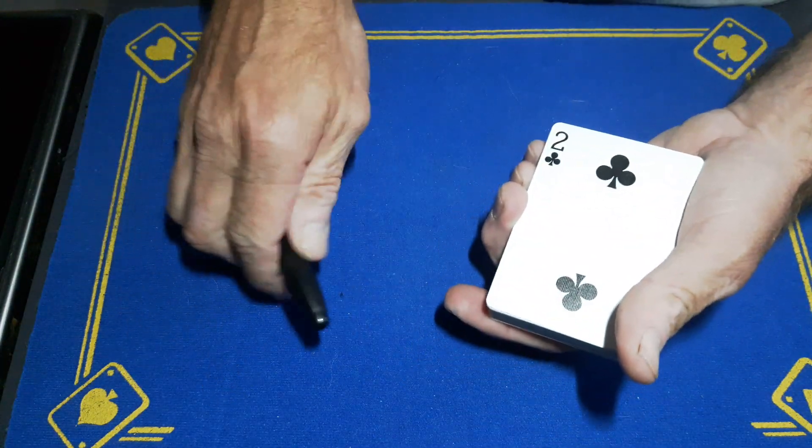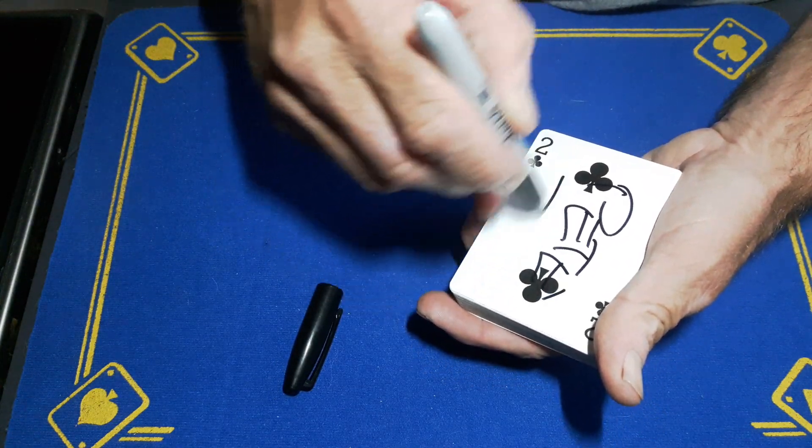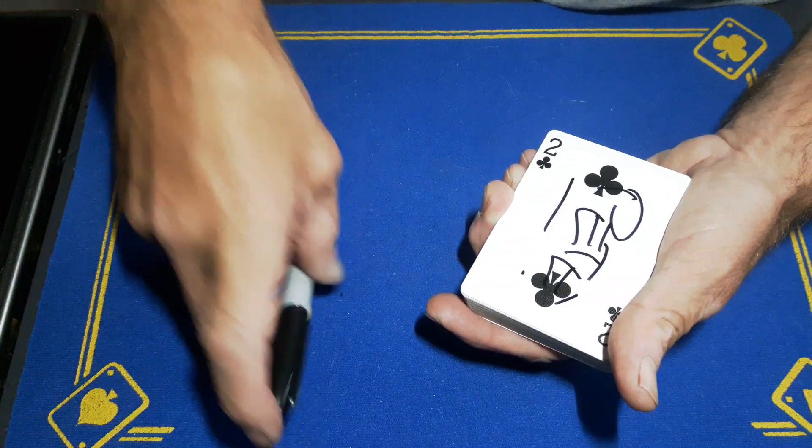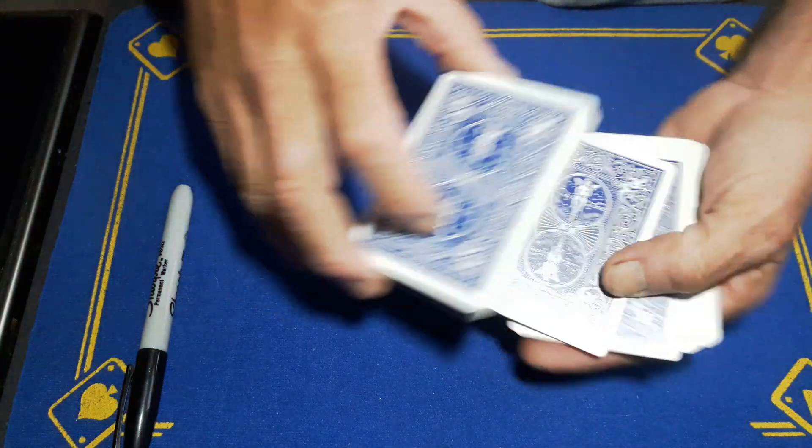Now this is a signed card effect, so we're going to get the spectator to sign the card. We just wait for that ink to dry. This is a Sharpie, so it dries quite quickly.